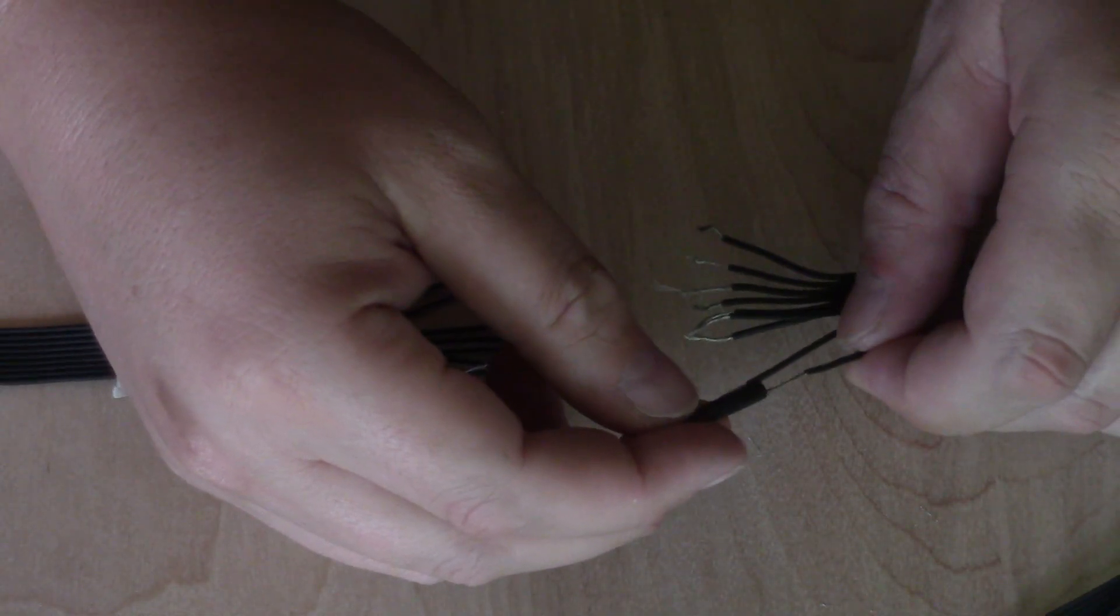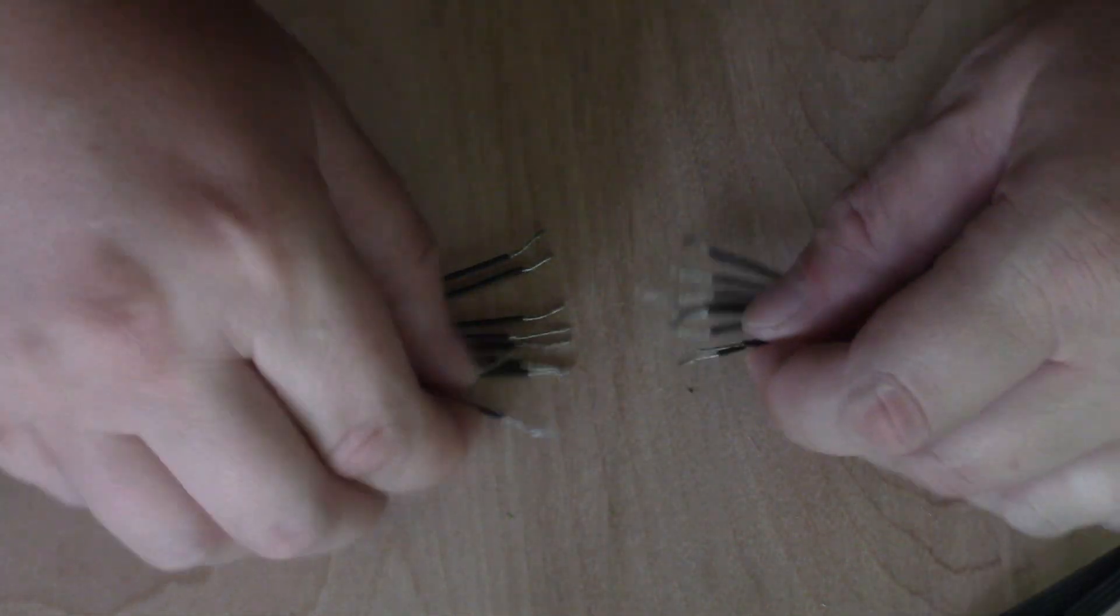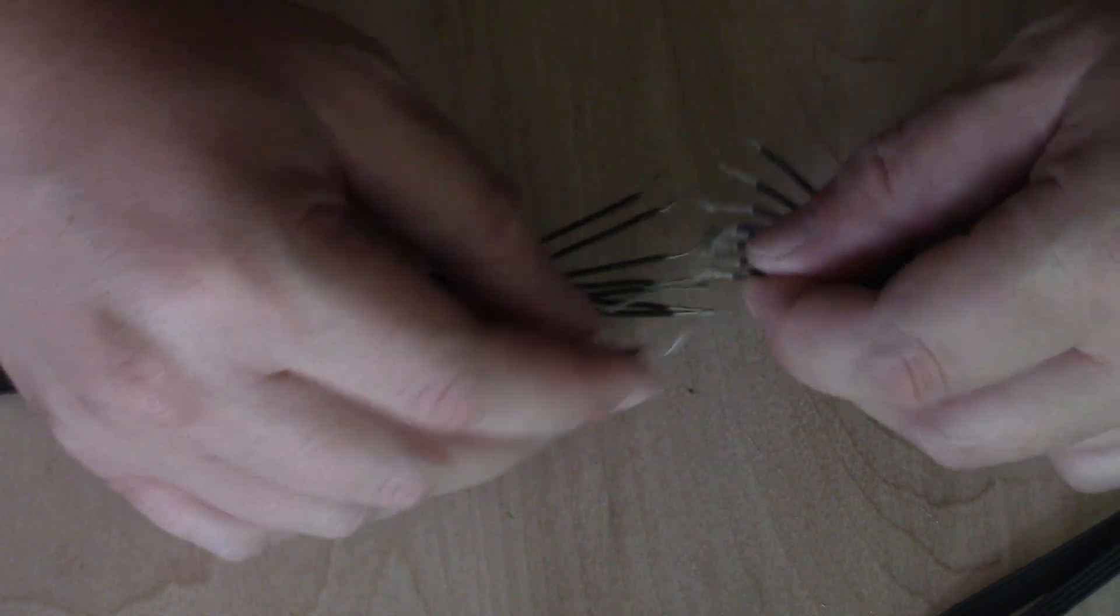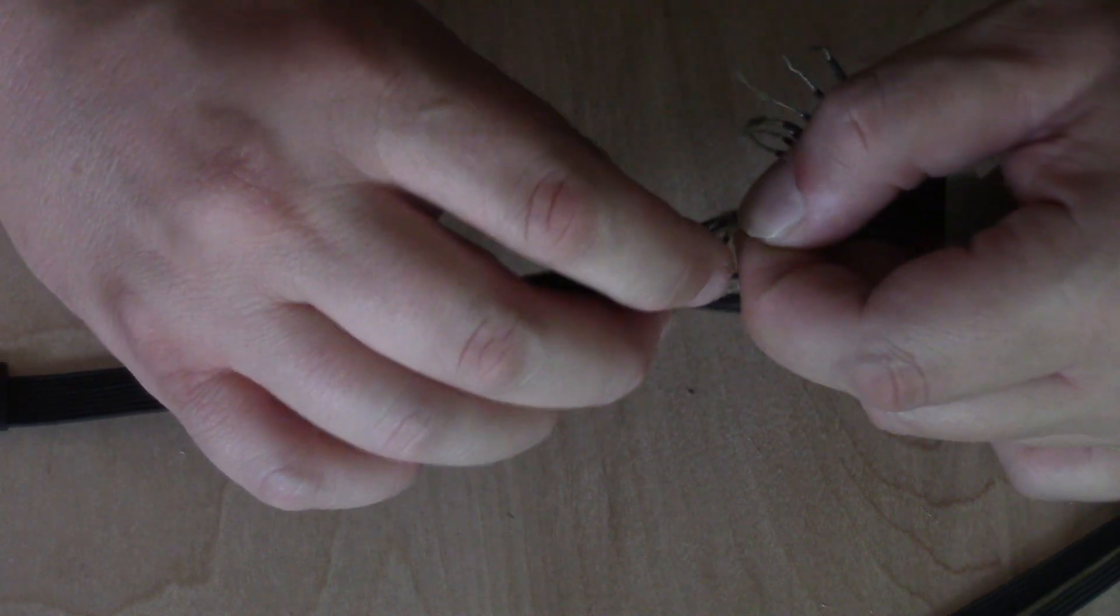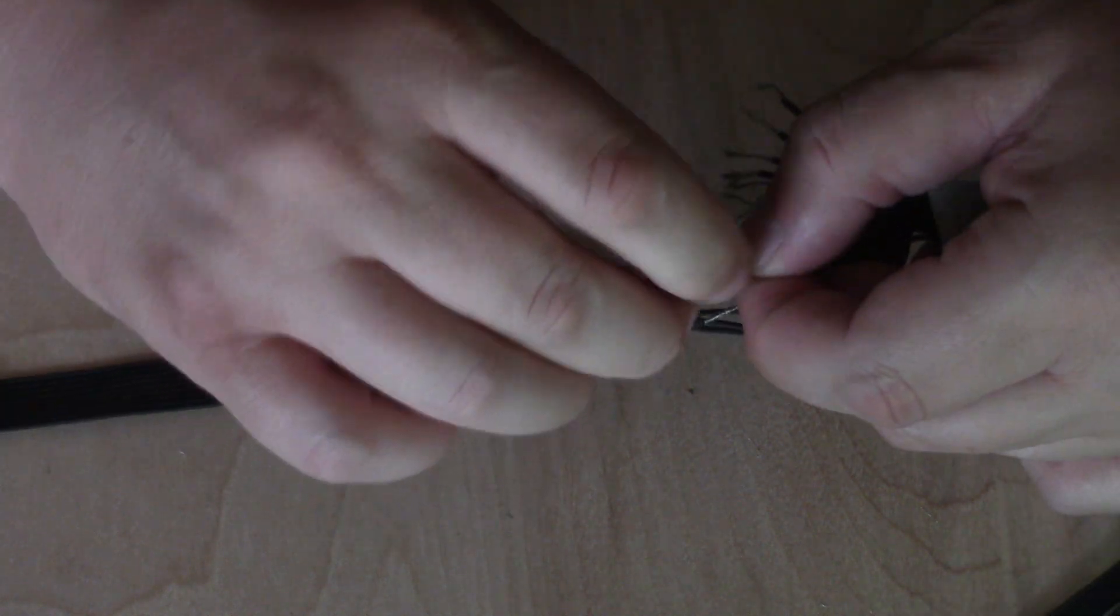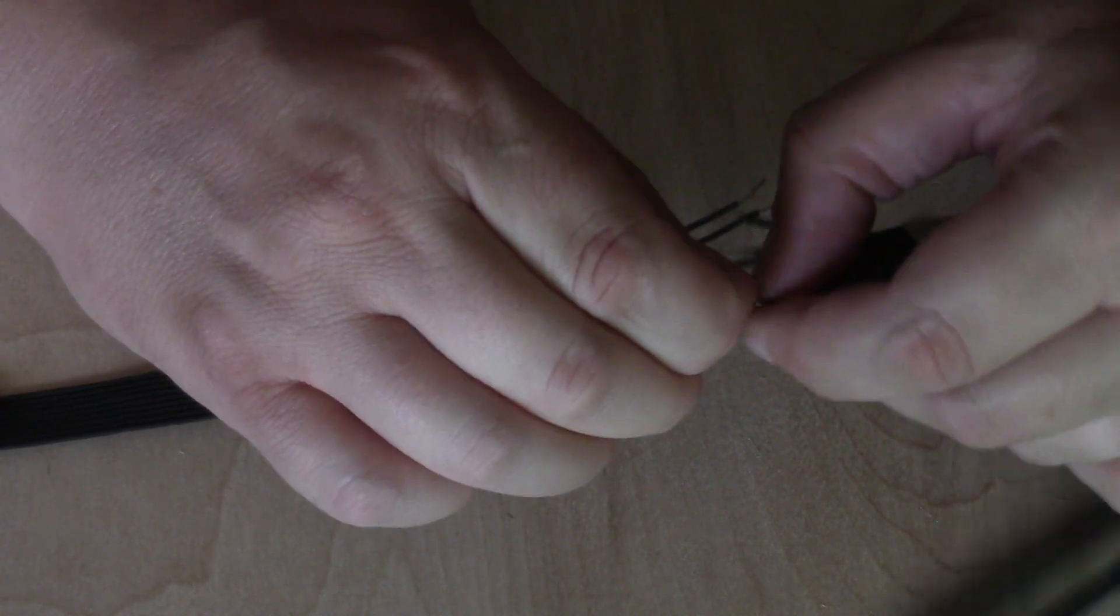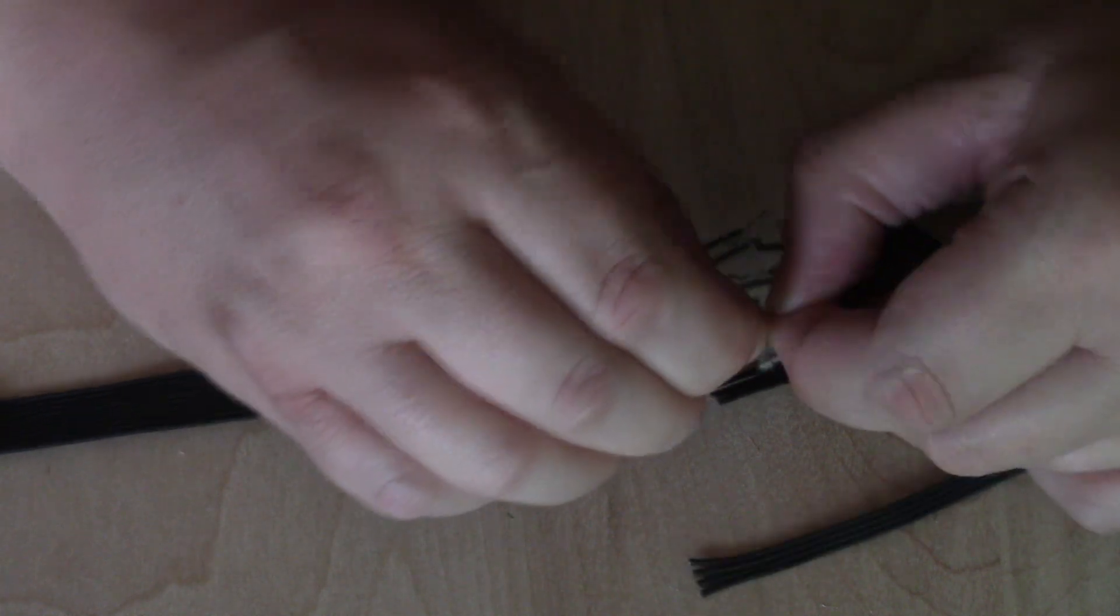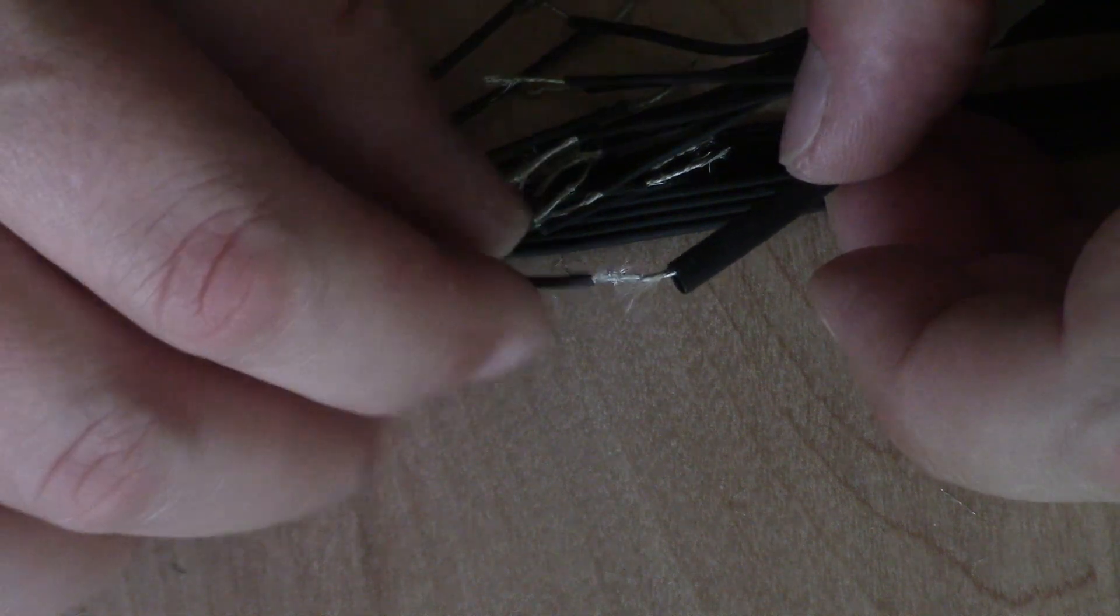I slide the tube over the wire. In hindsight, I should have placed the heat shrink tube over the wire before I stripped it. It would have made it a lot easier to go over the wire. I spliced the wires together, giving them a small twist together. We then move the heat shrink tube over the spliced wires and use the heat gun or a lighter to apply heat and shrink the tube over the wires. This will hold them in place.